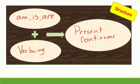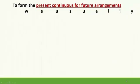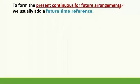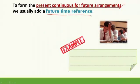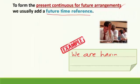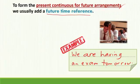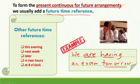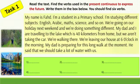We also call it the present progressive. To form the present continuous for future arrangements, we usually add a future time reference. For example: 'We are having an exam tomorrow.' Tomorrow is the future time reference. Other future time references include: this evening, next week, later, in two hours, at eight o'clock.